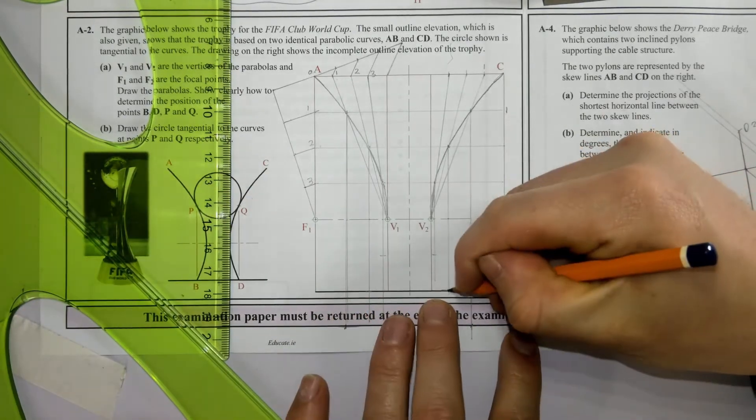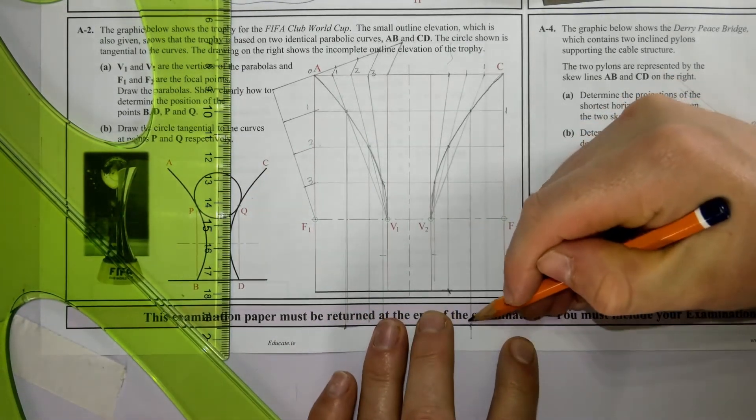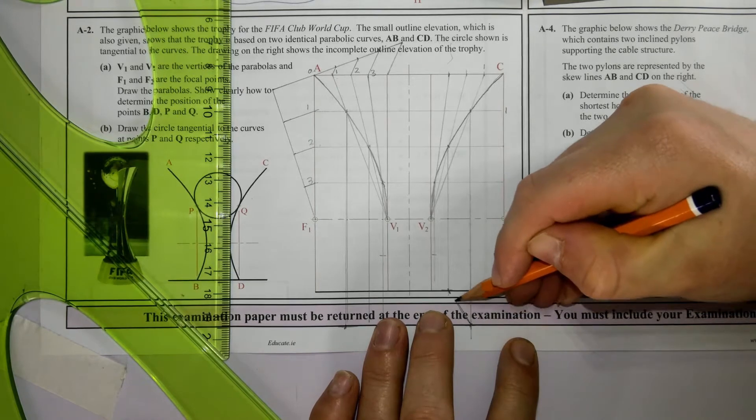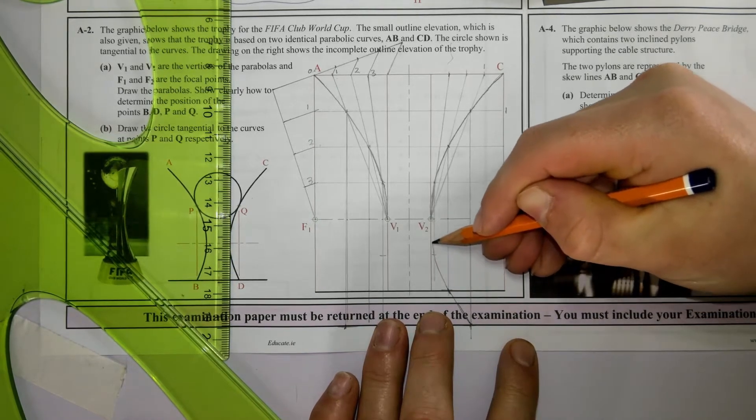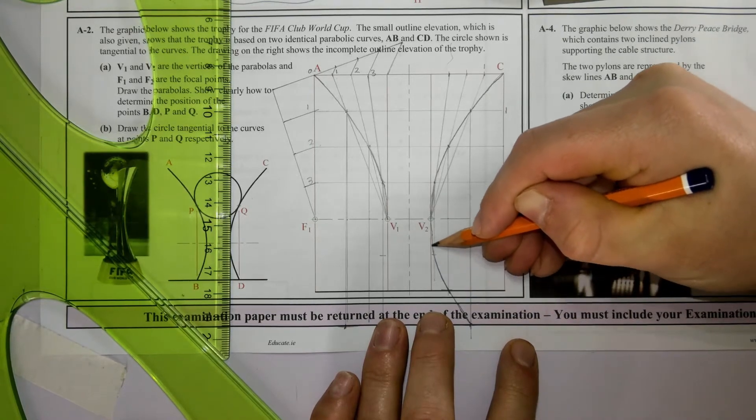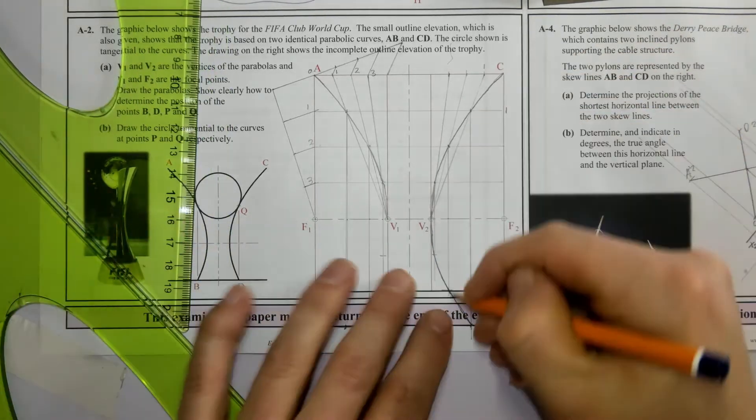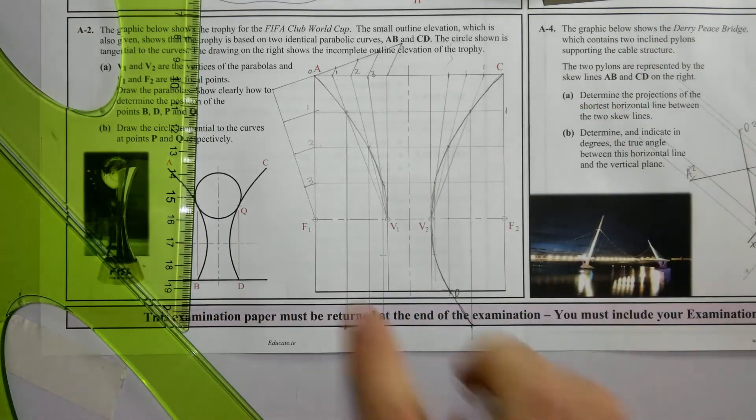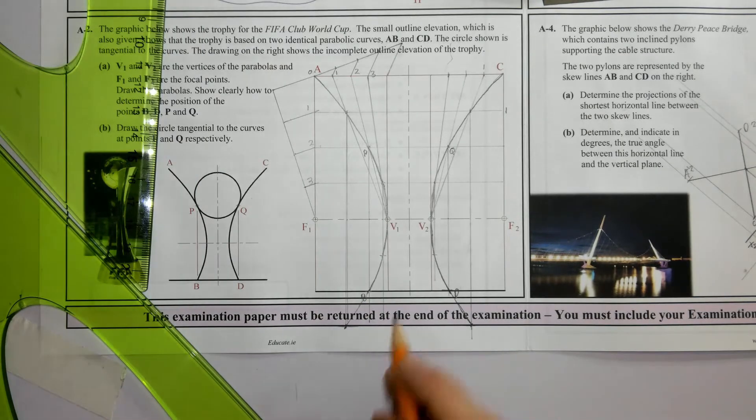And then we can freehand sketch those points on the curve in again. And then that's the construction clearly shown how to find point D. B and D are where the curve intersects the baseline, and then P and Q are vertically up.